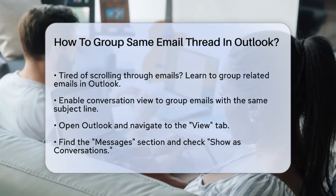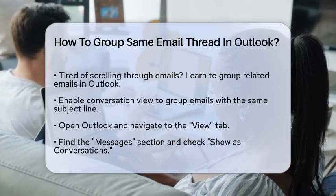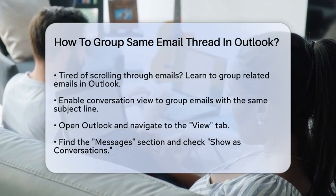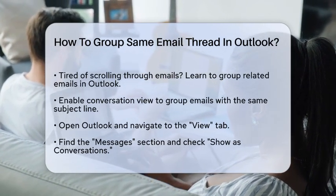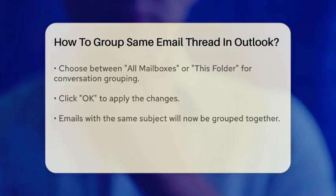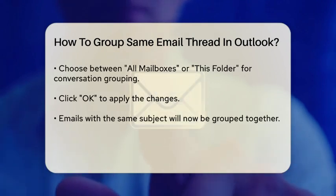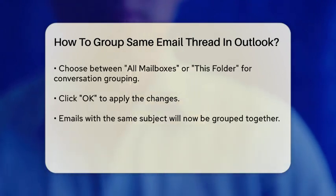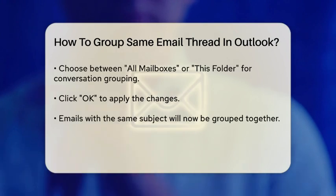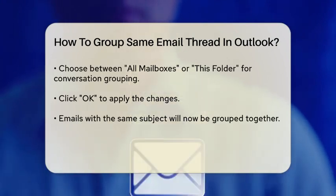To do this, open Outlook and go to the View tab at the top. Here, you'll find a section called Messages. Click on the checkbox that says Show as Conversations. You'll then have the option to select all mailboxes, or this folder, to decide which emails you want to include in the conversation view. Click OK to apply the changes.